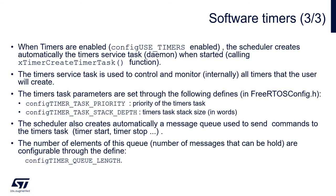To enable software timers, we need to set configUSE_TIMERS within the FreeRTOS config.h file. When timers are enabled, the scheduler automatically creates the TimerServiceTask by calling xTimerCreateTimerTask. The TimerServiceTask controls and monitors all timers created by the user. Its parameters are configured through two defines: configTIMER_TASK_PRIORITY — the priority of the TimerServiceTask — and configTIMER_TASK_STACK_DEPTH — the stack size in words. It is important to set a proper priority to ensure the task executes on regular intervals to control software timers.